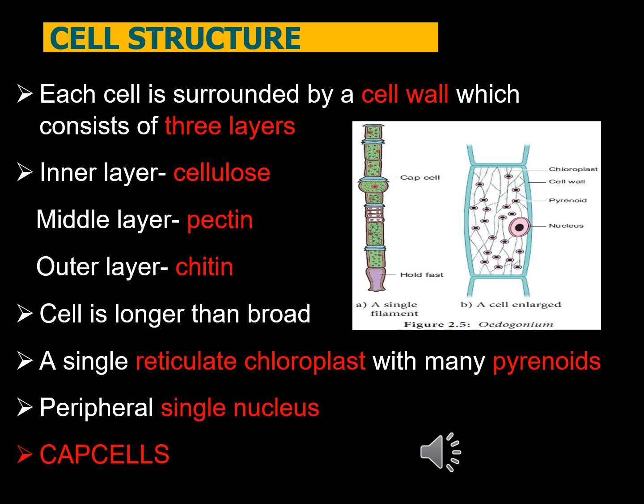Inside the cytoplasm there is a single reticulate chloroplast. The chloroplast is single and reticulate, meaning net-like. The reserved food material of the chlorophyllase is starch, and it is stored in special protein bodies known as pyrenoids.